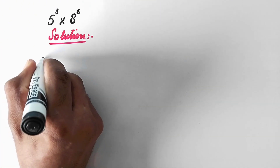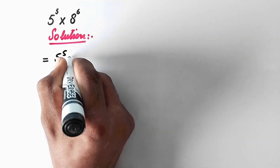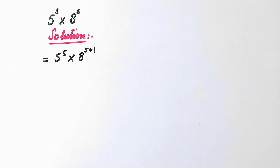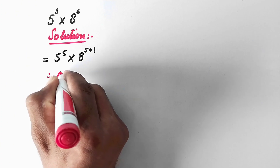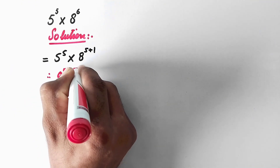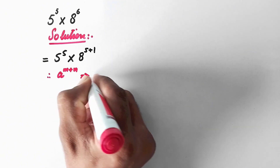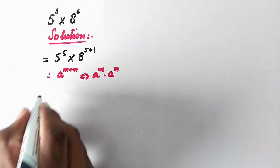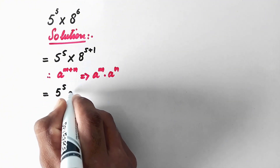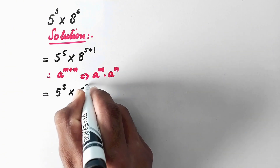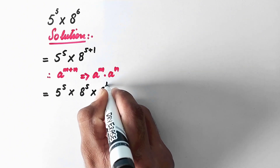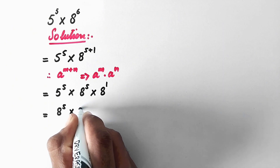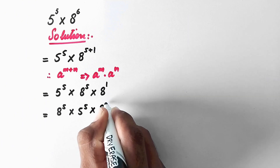Here in the first step, we can write 5 raised to power 5 multiplied by 8 raised to power 5 plus 1. And as we know, according to the rule of exponents, if we have a raised to power m plus n, then we can write it as a raised to power m times a raised to power n. So here we will write 5 raised to power 5 multiplied by 8 raised to power 5, multiplied by 8 raised to power 1.